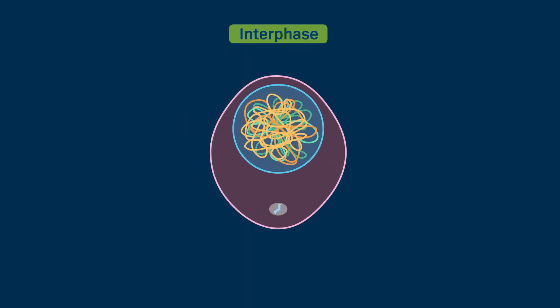During interphase, the cell grows and duplicates many of its cellular components, including organelles such as the centrosome. These cellular components are duplicated so that there is enough material to make up the two cells that will result following cell division.